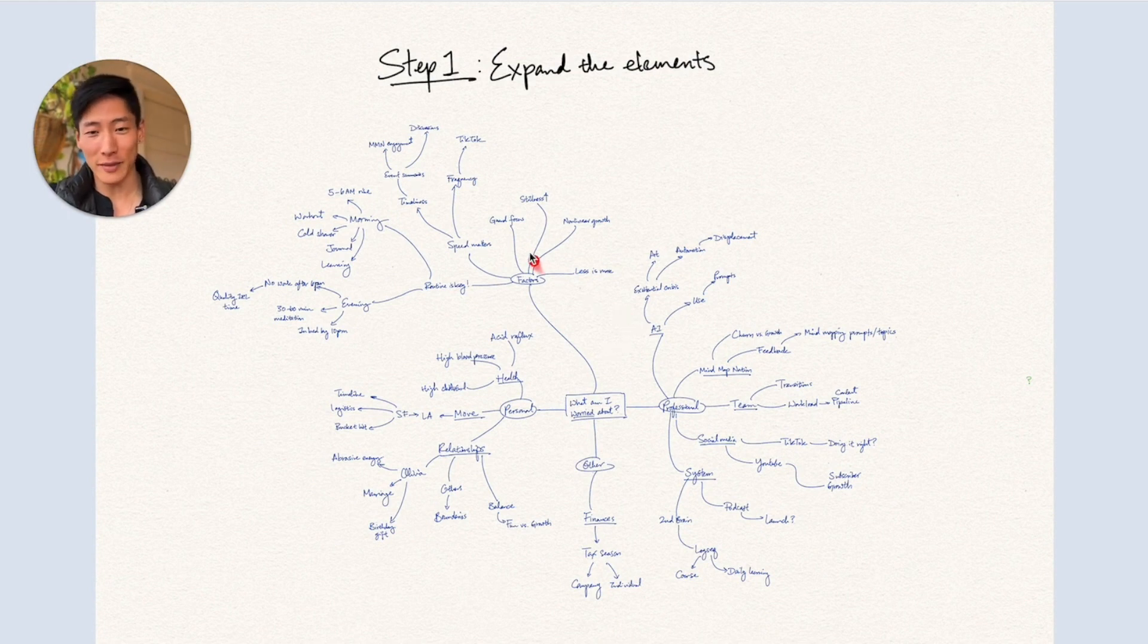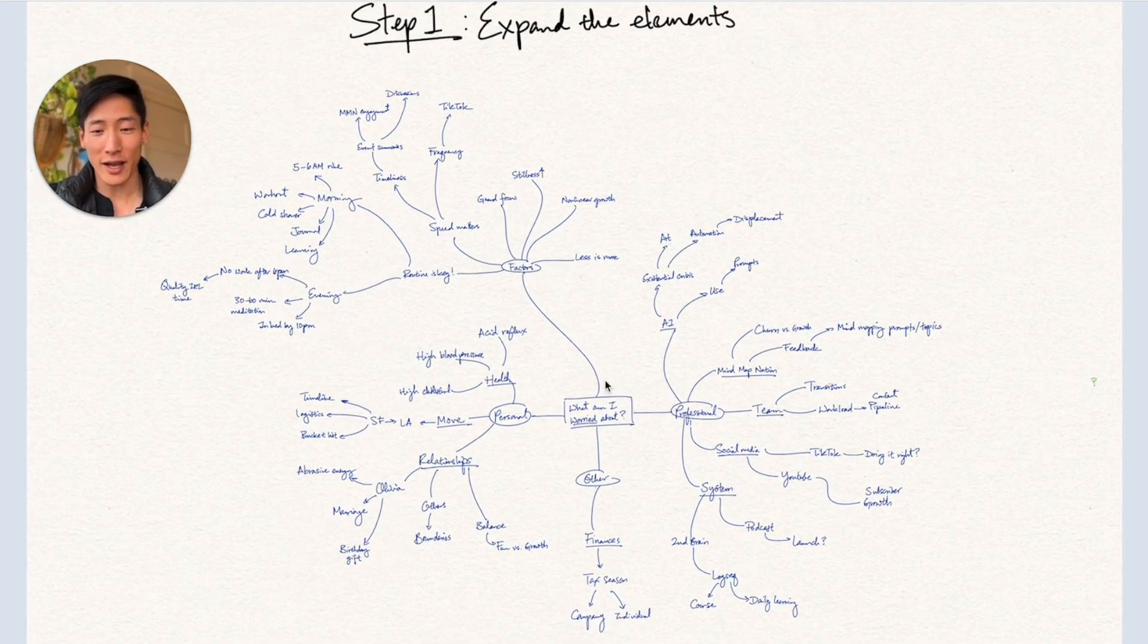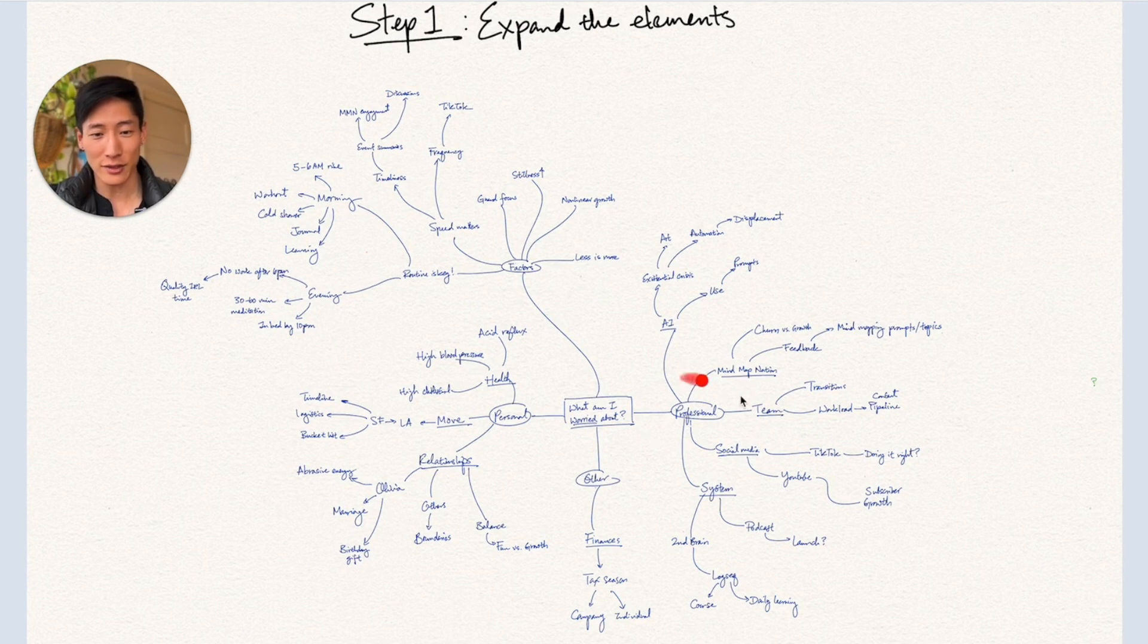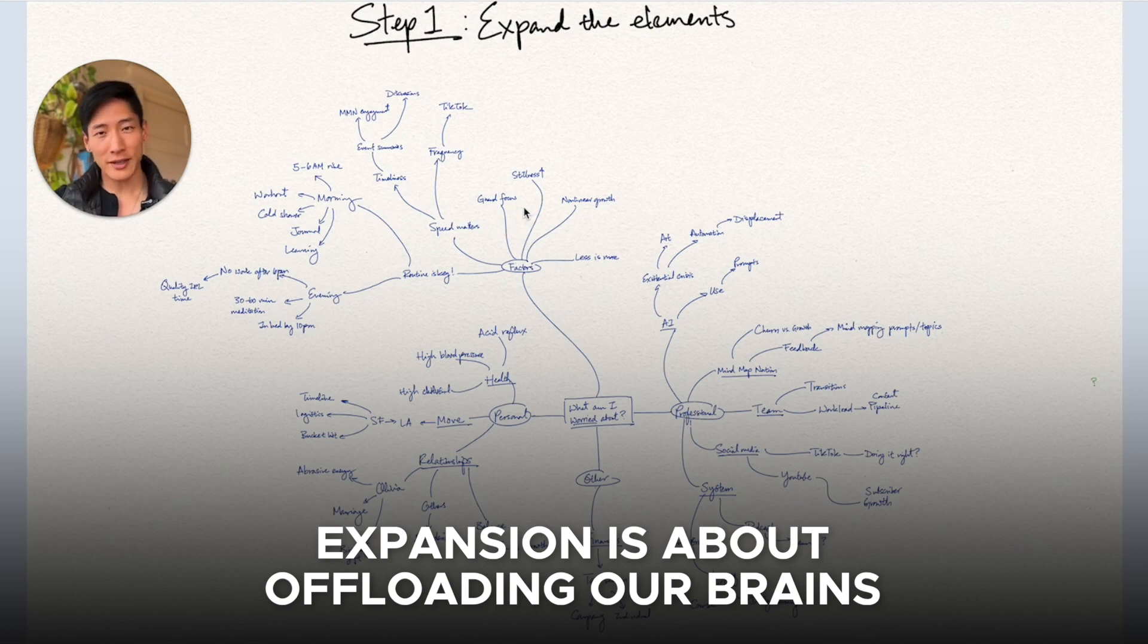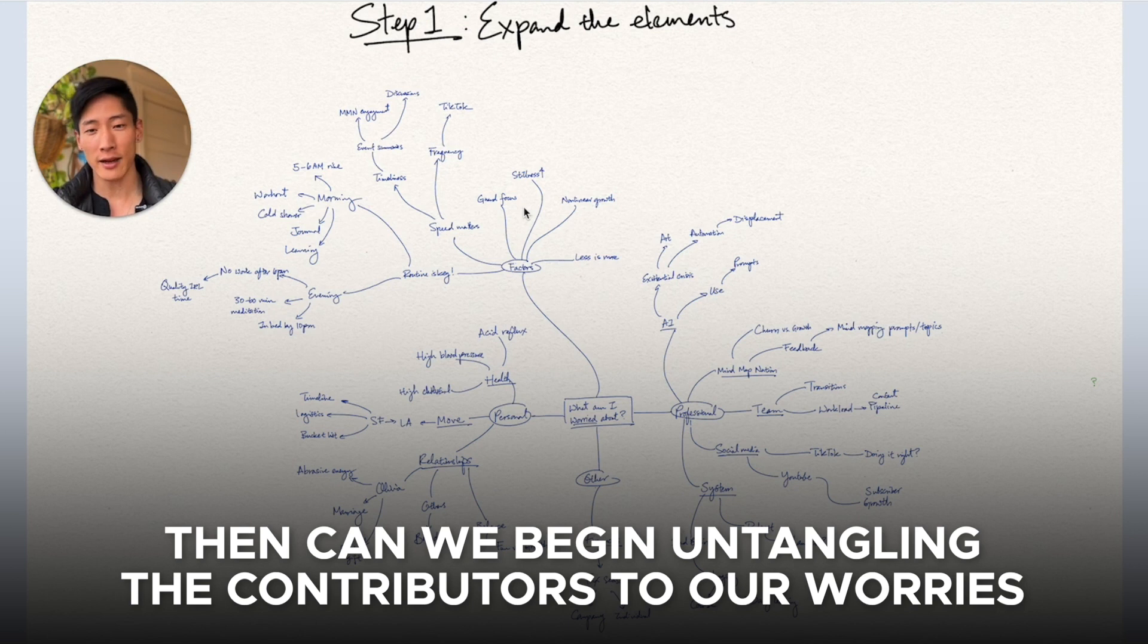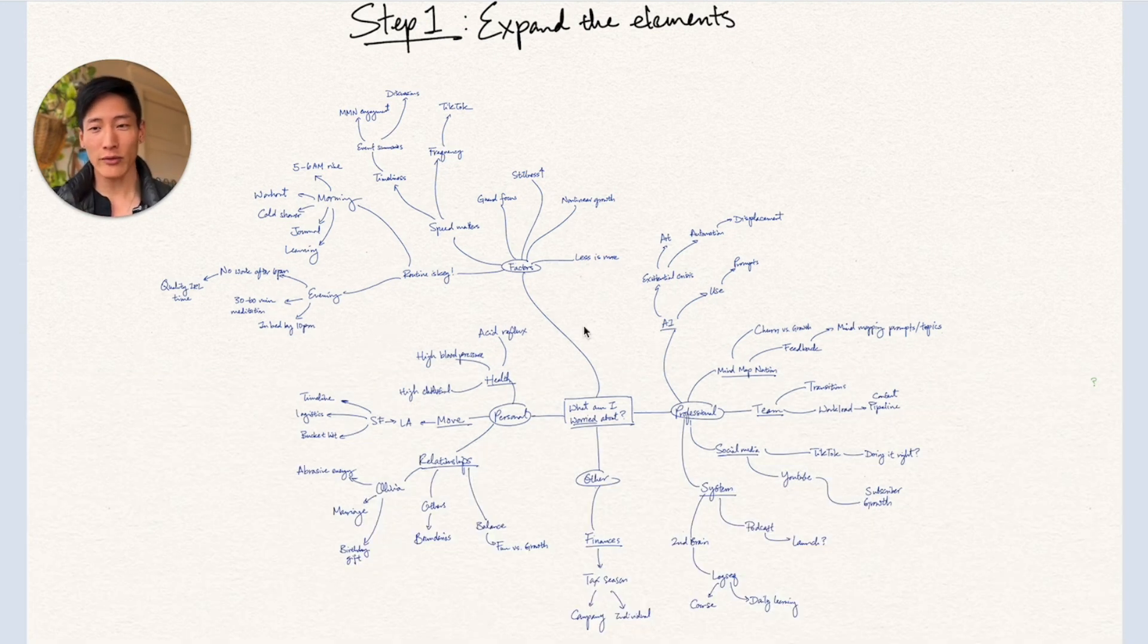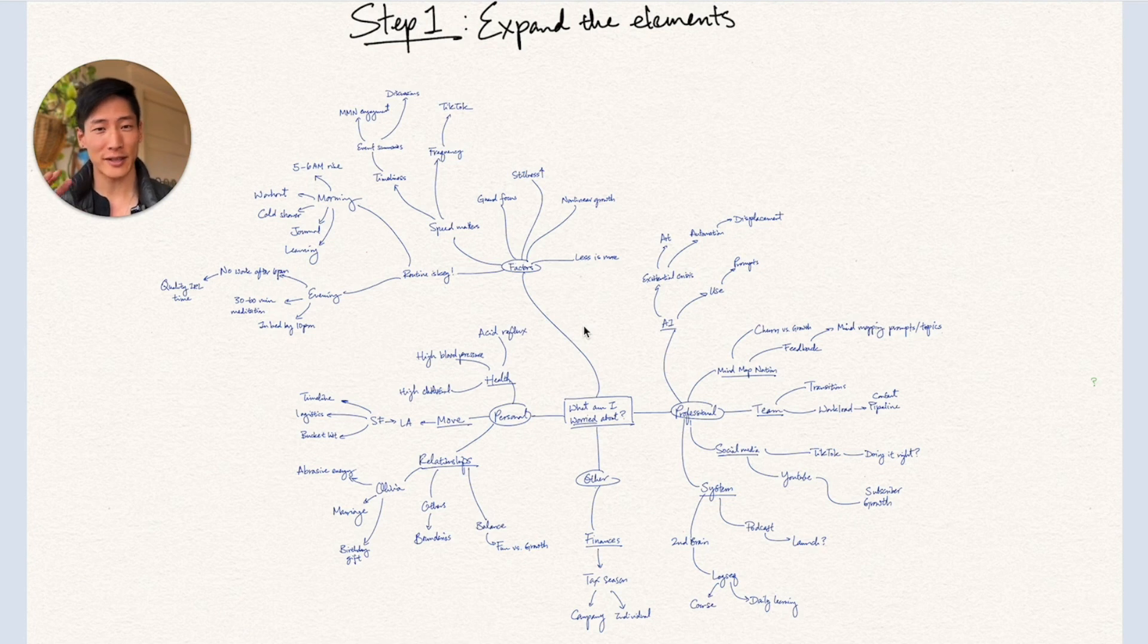So step one is to expand out all the different elements. And don't worry if this looks super complicated or overwhelming. We're going to go through each of these in detail in the next section. By expanding all the different elements, we actually have a bird's eye view of everything that goes into professional, personal, other, and then factors, because unless we put everything down on paper, it's still going to be in our brain. So we got to offload it to even start that process of de-stressing and untangling chaos.